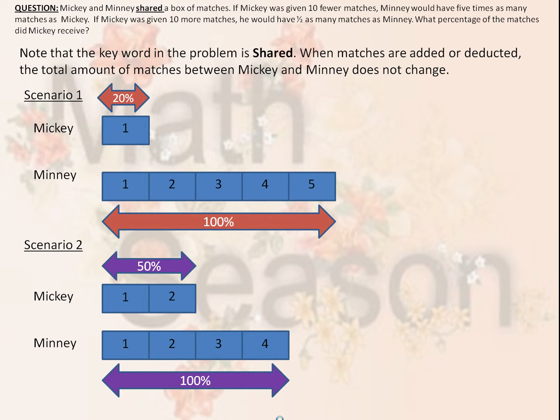Under Scenario 1, the 1 unit that Mickey is left with represents 20% of the 5 units, or 100%, that Minnie has. Under Scenario 2, the 2 units that Mickey has represents 50%, or half, of what Minnie has — 4 units.